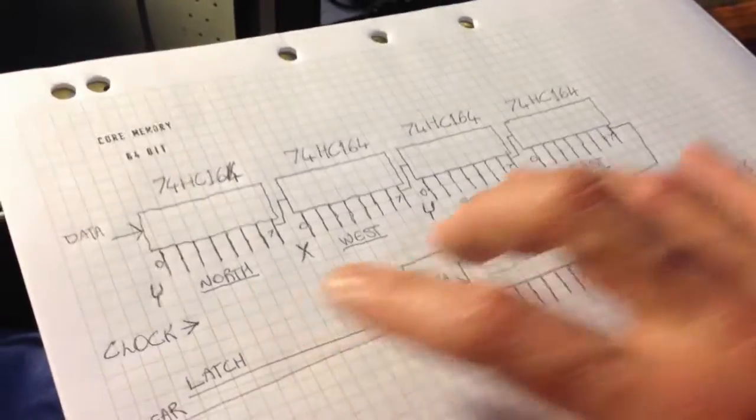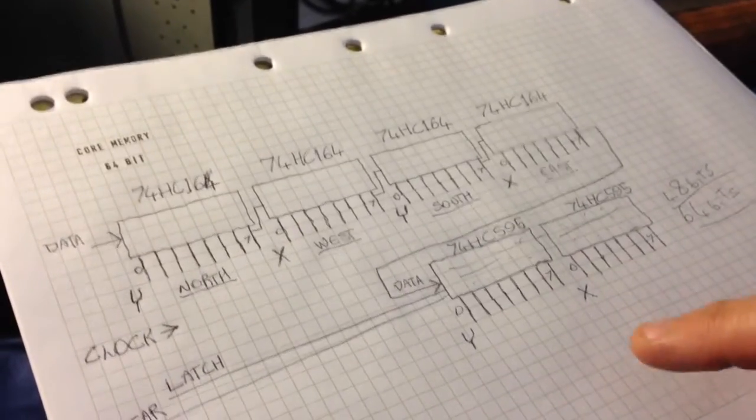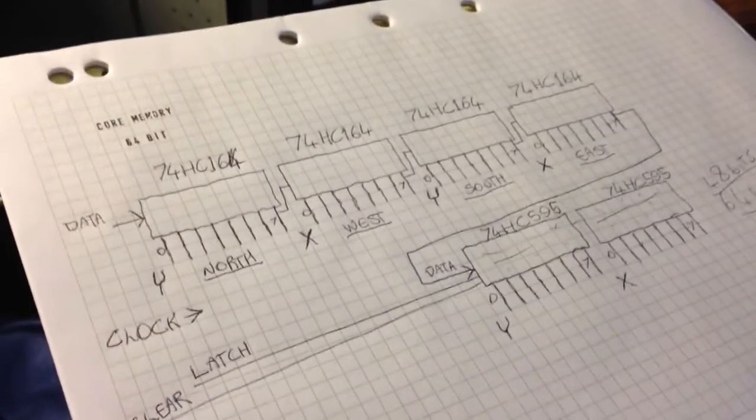So there'll be a 0 and a 1 somewhere in here, and the rest are irrelevant, because I'm taking the incredibly inefficient method of writing a whole 48 bits just to set one bit of the core memory.